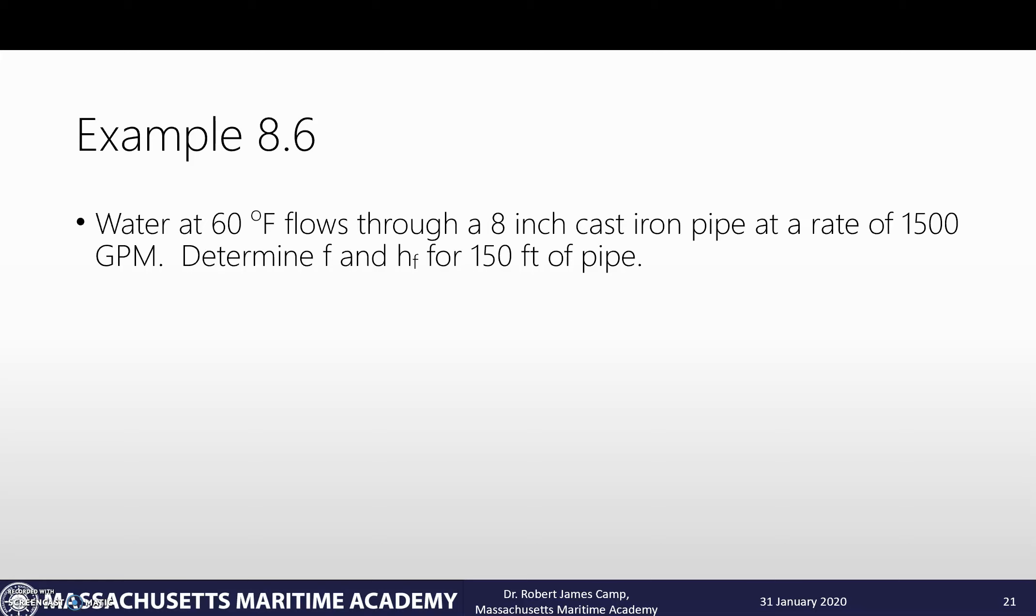Water at 60 degrees Fahrenheit flows through an 8-inch cast iron pipe at a rate of 1,500 gallons per minute. Determine the Darcy friction factor and the head loss for 450 feet of pipe.